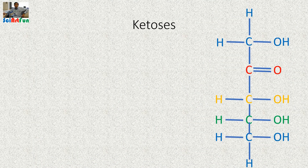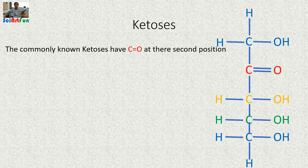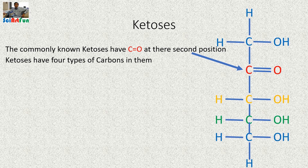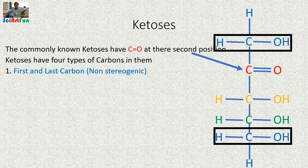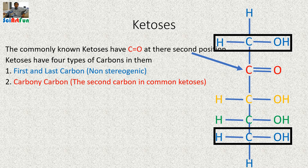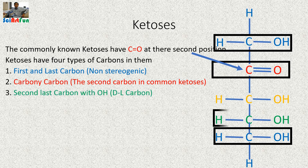First of all, let me tell you what ketoses are. Ketoses are sugars that have a ketone group in them, and the commonly known ketoses have the carbonyl carbon at their second position, as you can see in the given sample structure. Ketoses have four kinds of carbons. The first and last carbons are both non-stereogenic, so we cannot include them in our mnemonics. The second kind is the carbonyl carbon, which is the second carbon in common ketoses — we also do not need any mnemonic for this carbon.